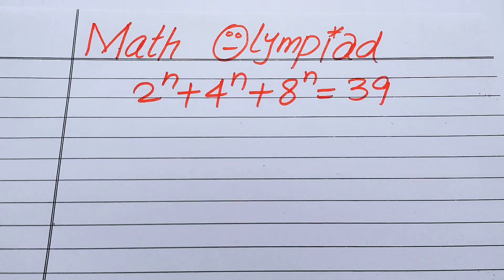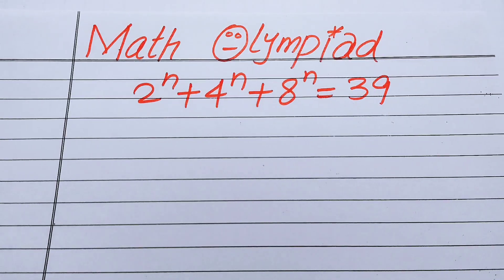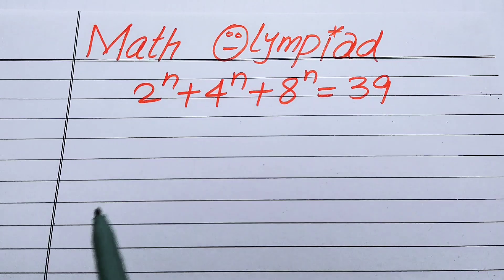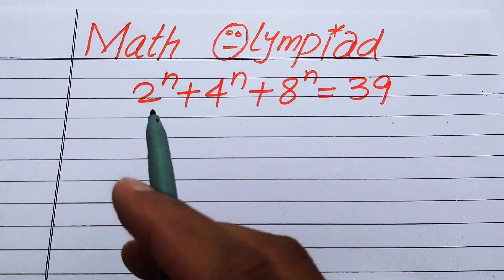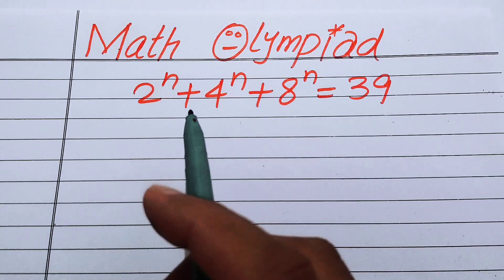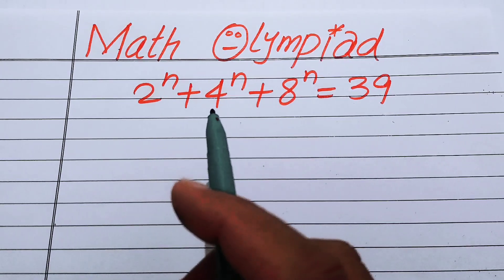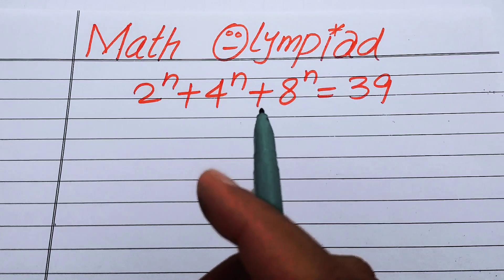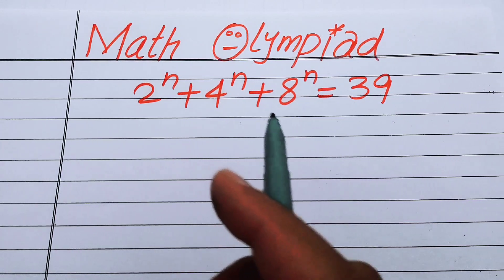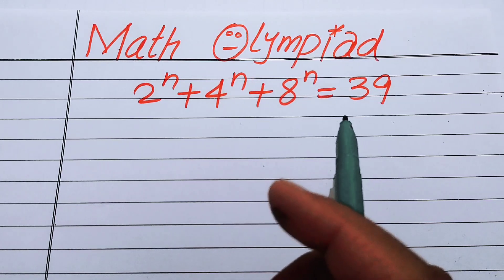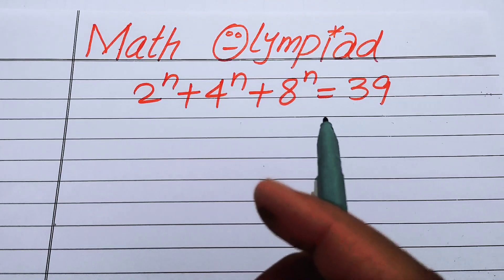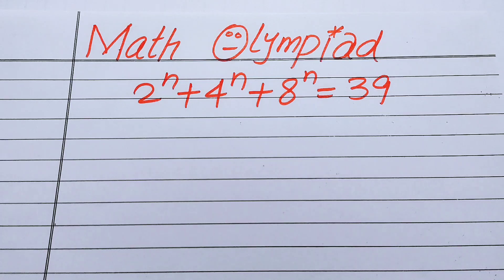Hello everyone, welcome back to the Map of Mathematics. In this video we are going to solve this nice algebra problem: 2 to the power of n plus 4 to the power of n plus 8 to the power of n equals 39, and we will solve this for the real values of n.